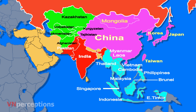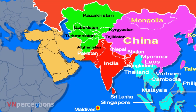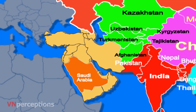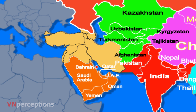The South Asian countries include India, Pakistan, Nepal, Sri Lanka, Bhutan, Maldives, and Bangladesh. The West Asian countries consist of Saudi Arabia, Yemen, Oman, United Arab Emirates, Qatar, Bahrain, Kuwait, and Iran.